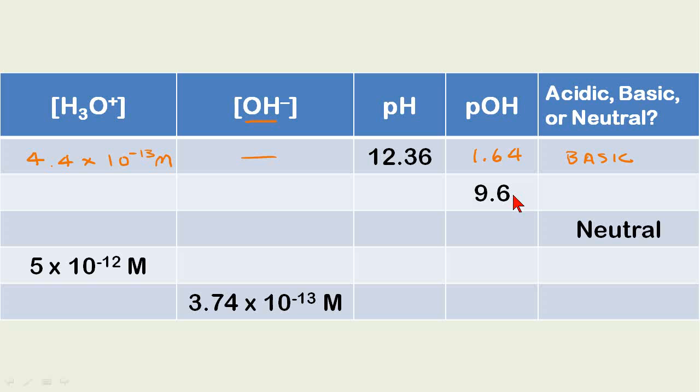Here's another example. Note that this is one significant figure. 9.6 subtracted from 14 gives us 4.4, and we know that is acidic. If we calculate the pOH, it gives us 2.5 times 10 to the minus 10 molarity.